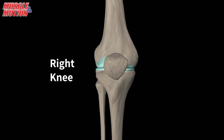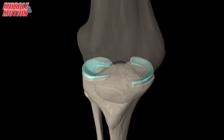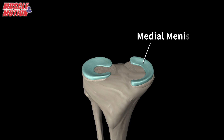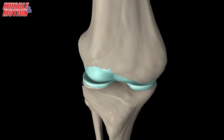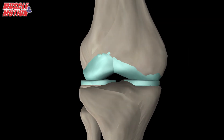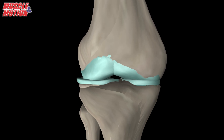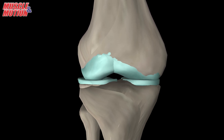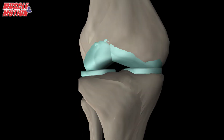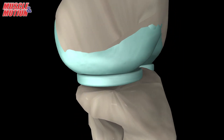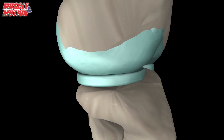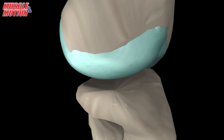There are two menisci in the space between the femoral and tibial condyles: the medial meniscus and the lateral meniscus. The menisci of the knee are important for two main reasons. One, they work like a gasket to spread the force from the weight of the body over a larger area and protect the knee joint cartilage. Two, they help stabilize the knee by acting like a wedge — the menisci are thicker around the outside, and this thickness helps keep the round femur from rolling on the flat tibia.